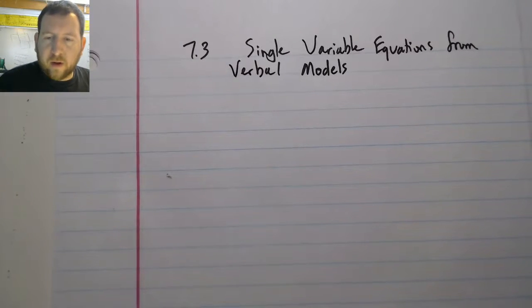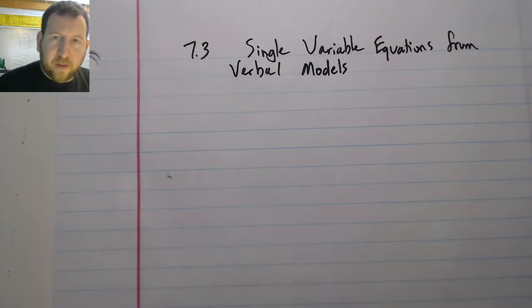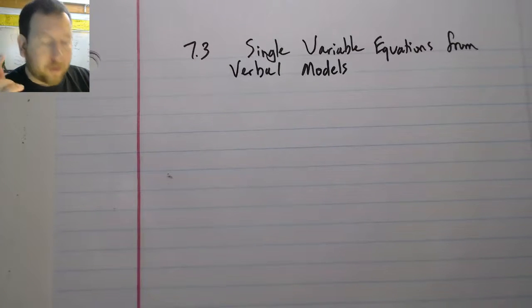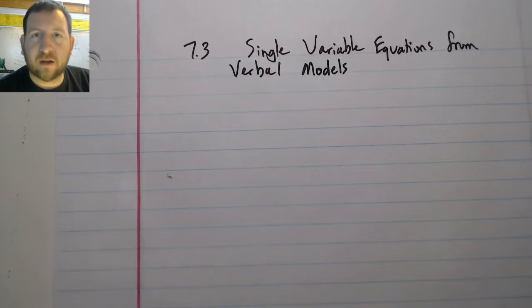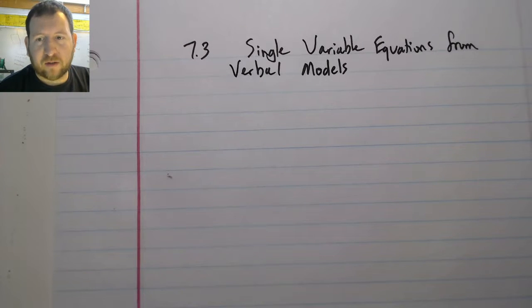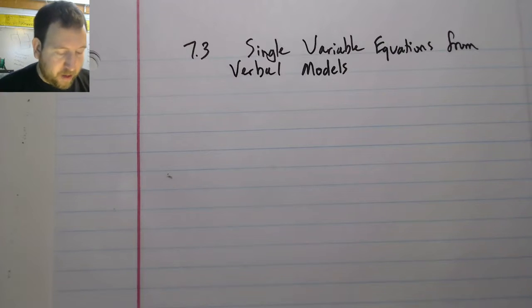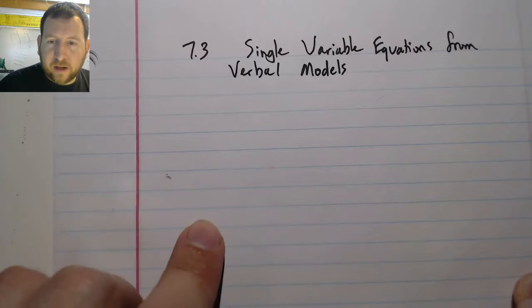Alright, we're going to continue on with what we were talking about, building equations from verbal models. So this time we're going to be using addition, subtraction, multiplication, and division, all the operations from a verbal model, so from a word problem. So let's look at an example here.